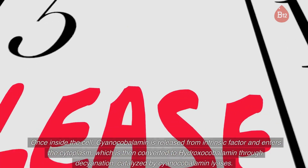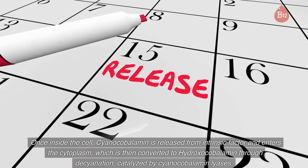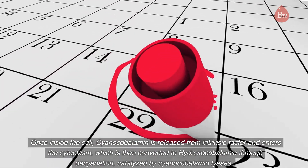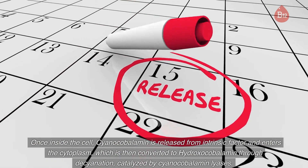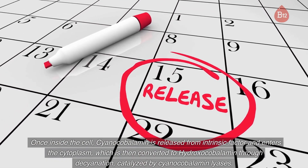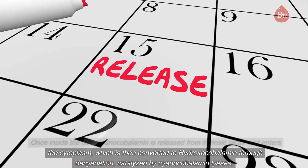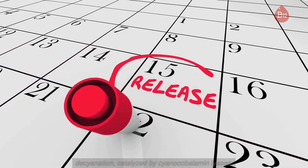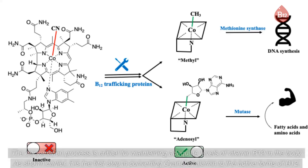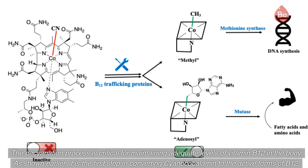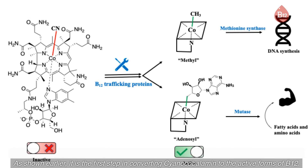Once inside the cell, cyanocobalamin is released from intrinsic factor and enters the cytoplasm, where it is converted to hydroxocobalamin through decyanation catalyzed by cyanocobalamin lyases. The decyanation process is critical for maintaining adequate levels of vitamin B12 in the body, as it is the first step in converting cyanocobalamin to the active forms of B12.